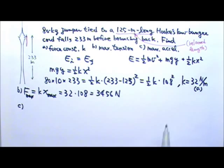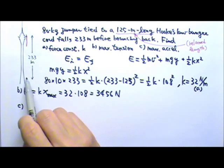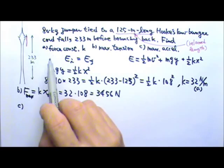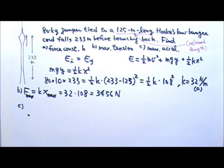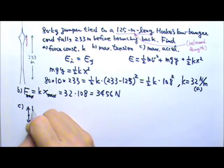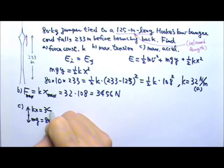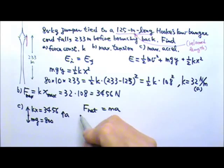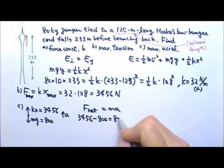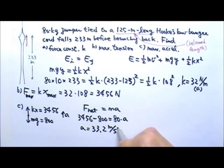For part C, the maximum acceleration occurs at the lowest point, when the bungee cord is stretched by the maximum amount. Drawing the force diagram for the person hanging there, the forces are mg = 800 N downward, and kx = 3,456 N upward. The upward force is bigger, so acceleration is upward. Net force equals ma: 3456 minus 800 = 80 × a, giving acceleration of 33.2 m/s².